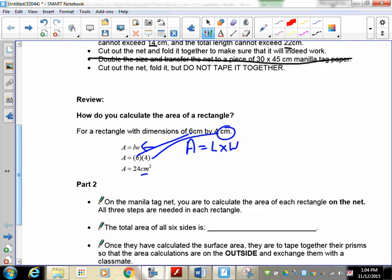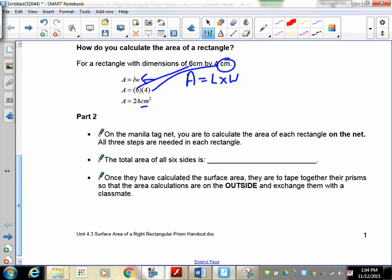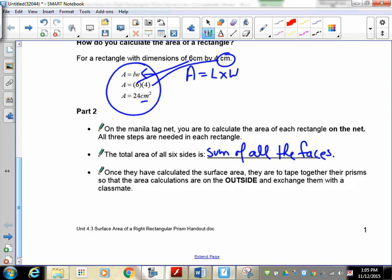On the manila tag that you have, you have a bunch of rectangles. What I want you to do, on every one of those rectangles, is I want you to calculate the area for that rectangle. That's why I wanted you not to fold it up and tape it together. Keep it laying flat. So total area, once you've got them all together, is going to be the sum of all the sides, or all the faces, I guess we should use that term. So what I want you to do is to pause the recording. I want you to take your net, calculate the area of every face using these three steps on every face. So you're going to do this 6 times, one for each face. Once that's done, tape it together with the calculations on the outside, please. And then I want you to give it to a friend, and have them actually double check your work while you check their work. So pause and make this happen.